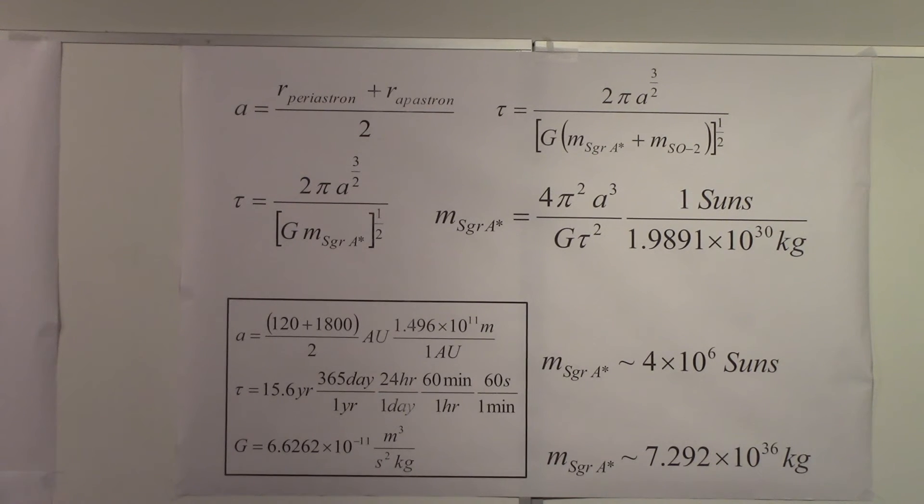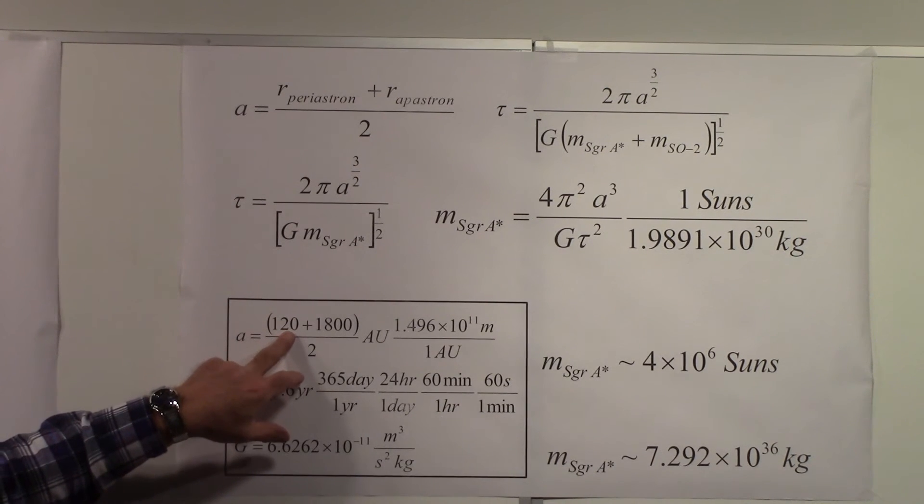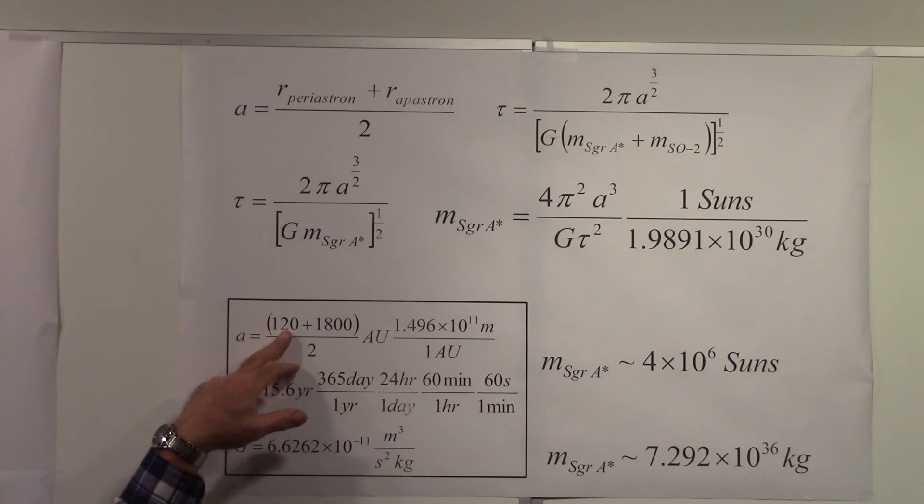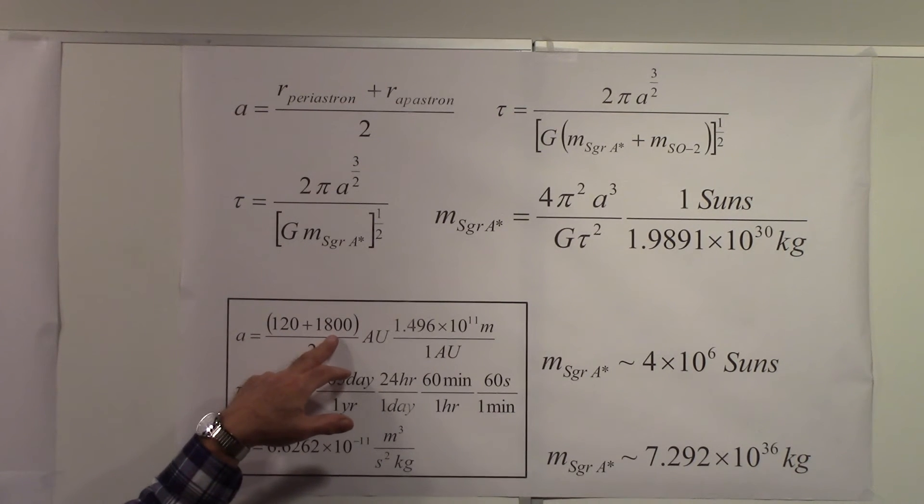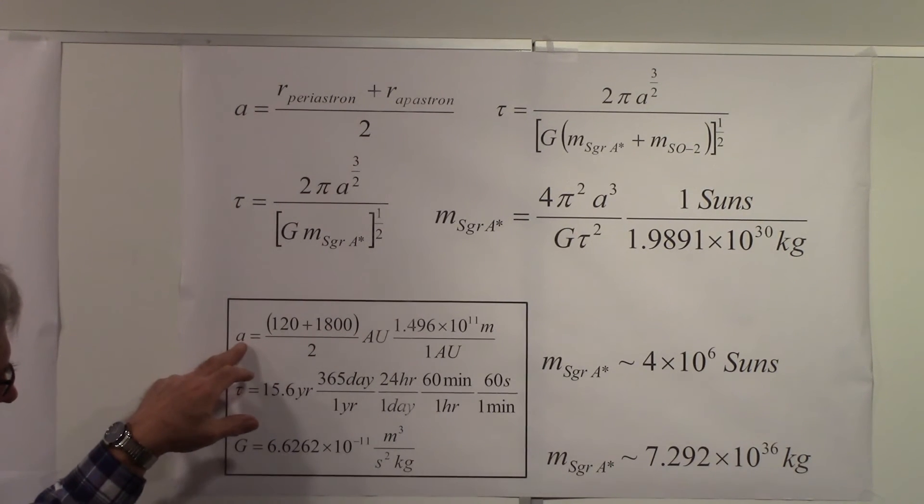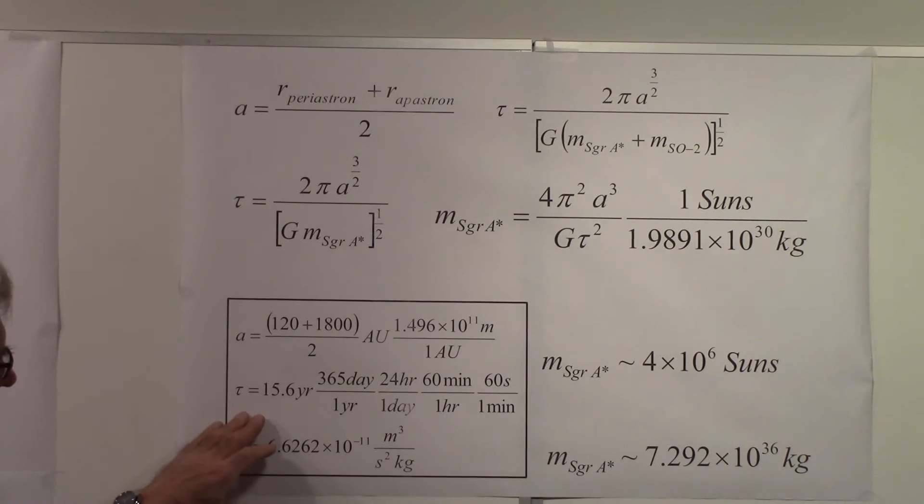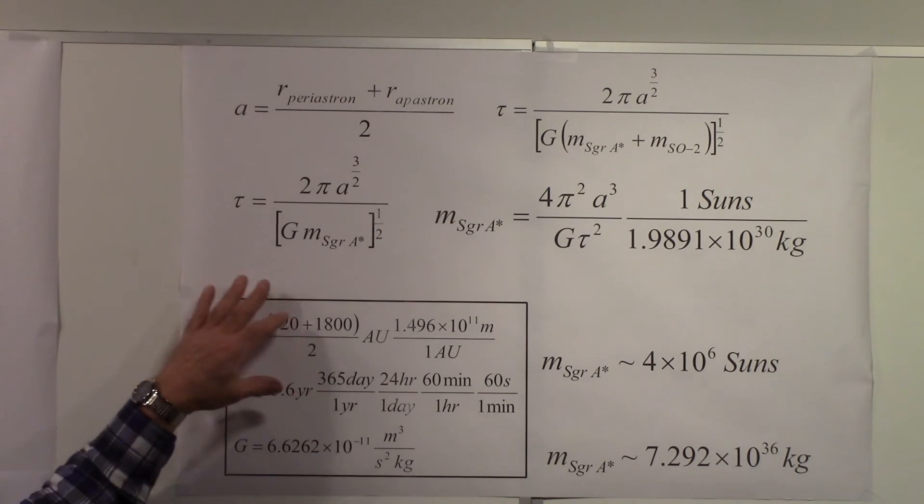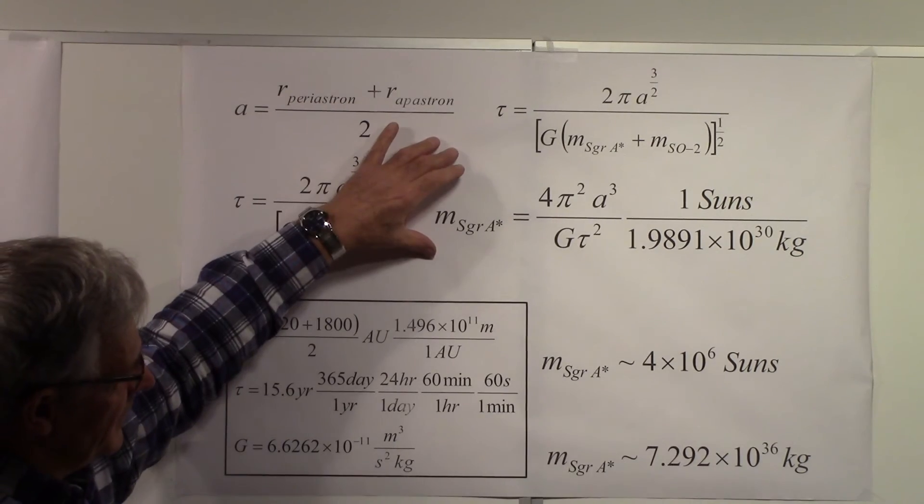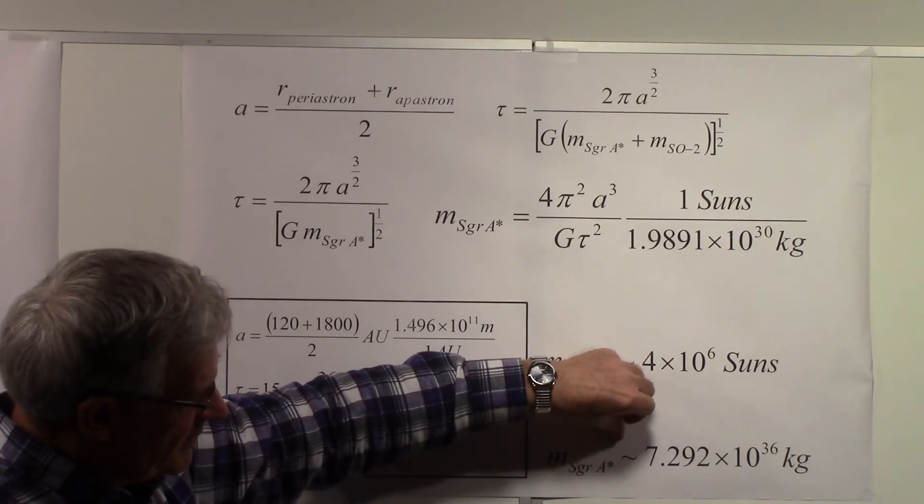The actual semi-major axis: the closest point of approach of S02 to the black hole is 120 astronomical units. At the far point it's 1800 astronomical units away, so the semi-major axis is the sum of those two numbers divided by two. The period is 15.6 years, converting that to seconds here, and the gravitational constant is this value. If we take these numbers and substitute them in here, we find that the mass of Sagittarius A* is this number.